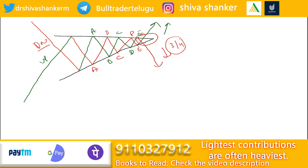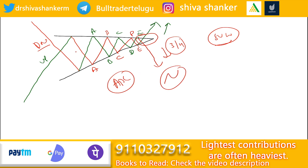If we see this as the ABCDE pattern, we also need to check the sub-wave structure. Each leg has an ABC pattern again. So the A wave has a sub-wave structure of A, B, C. Each sub-wave within the triangle leg is a three-wave structure.